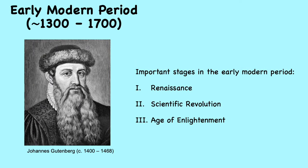The modern era includes the early modern period, around the 1500s until the present. This photo is of Johannes Gutenberg, one of the key players in the development of science and technology in the early modern period. Later in this lesson, we shall know why he played a significant role. There are three important points during the early modern period: the Renaissance, the Scientific Revolution, and the Age of Enlightenment.